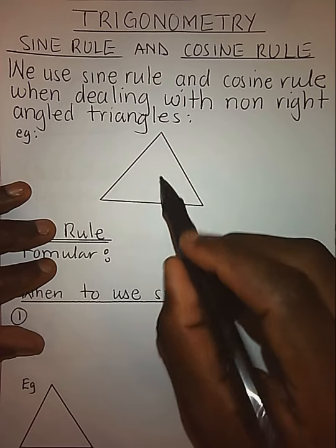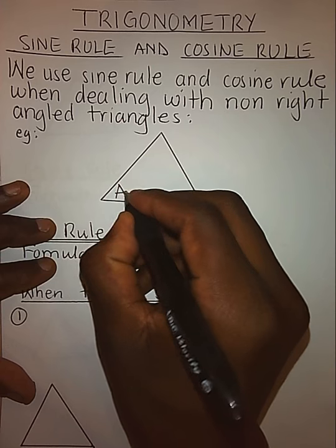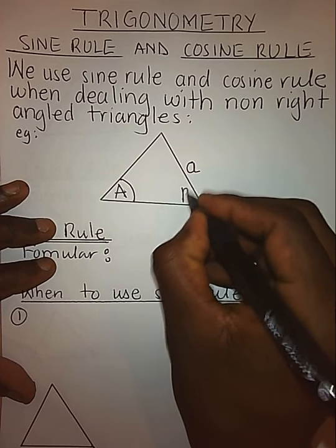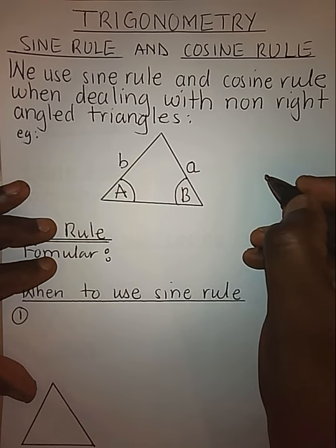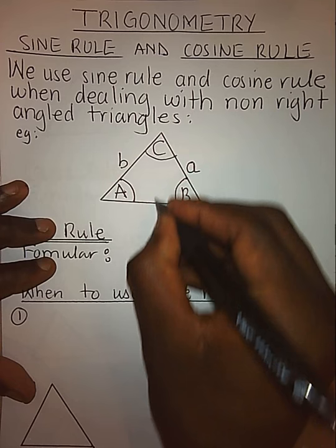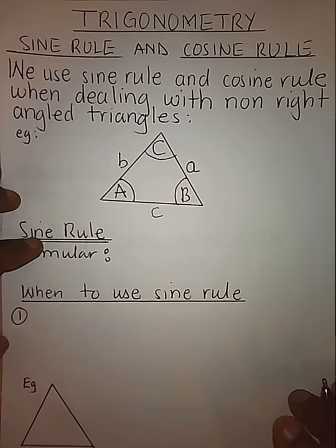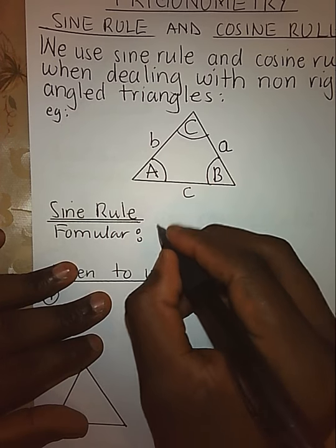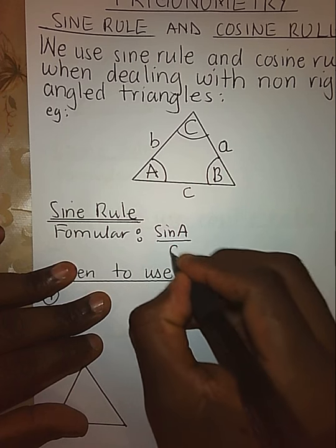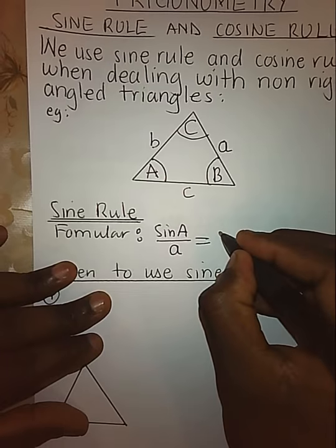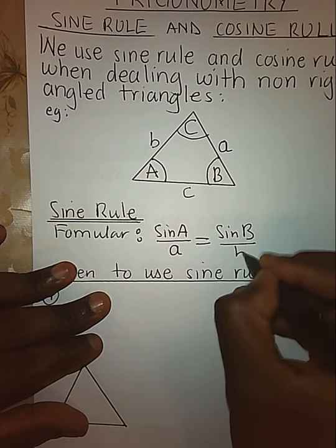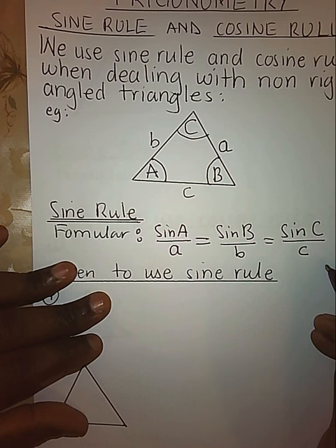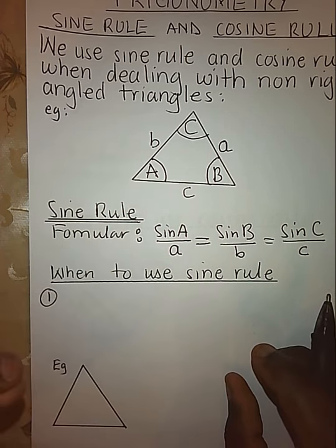This is our example of a non-right-angle triangle. We call this angle A and its opposite side, side A. We call the other angle B and its opposite side, side B. Hence angle C and its opposite side, side C. Now to start with, let's look at the sine rule. The sine rule formula is given by the proportion: sine of angle A over its side equals sine of angle B over its side equals sine of angle C over its side C. That proportional statement can help us solve any angle or side we are looking for.